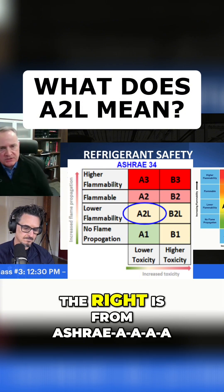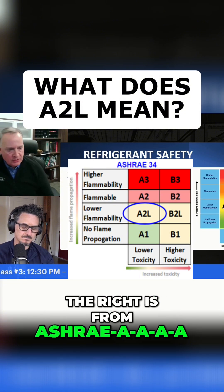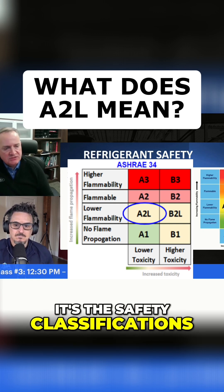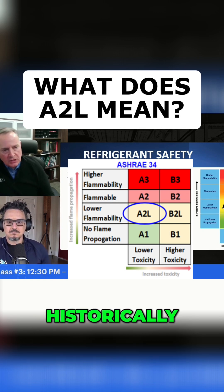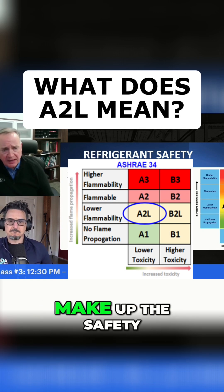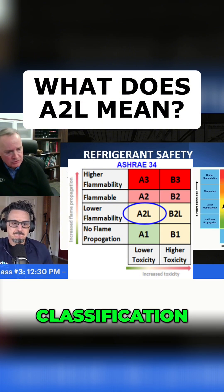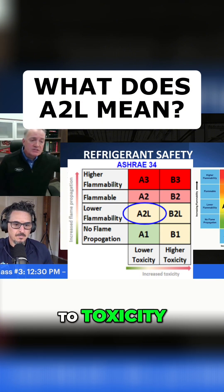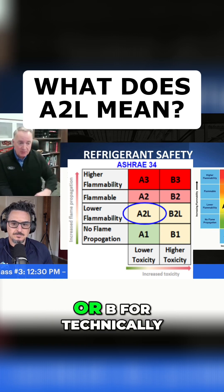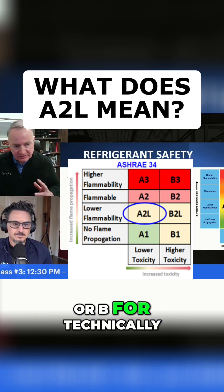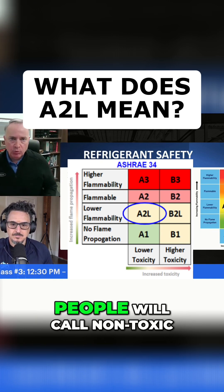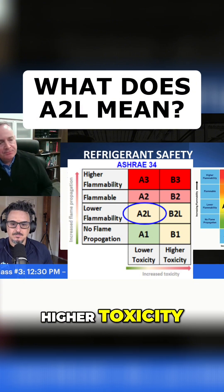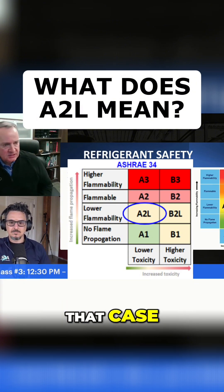This chart here on the right is from ASHRAE 34, which talks about refrigerant safety — the safety classifications for refrigerants. Historically, there are two digits that make up the safety classification. The first digit refers to toxicity: either an A for lower toxicity, which a lot of people call non-toxic, or B for higher toxicity.